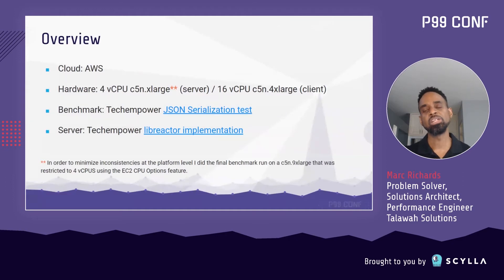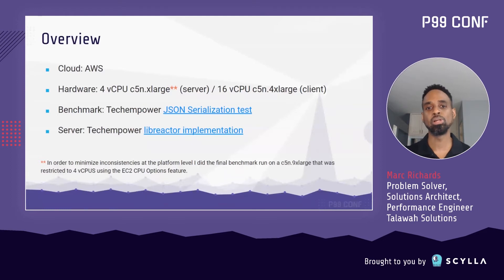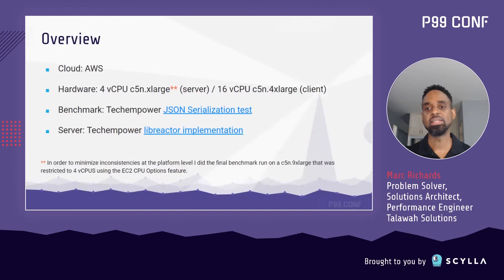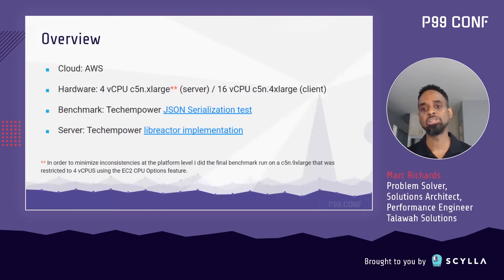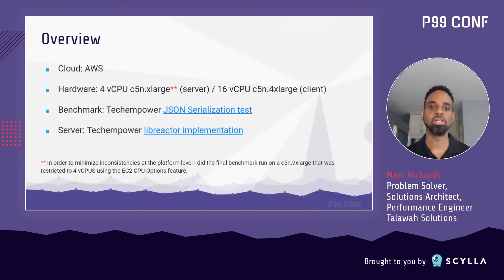The JSON benchmark is pretty simple — it just expects the server to encode and return a hello world JSON object. For the API server software, I started out with an existing implementation that was built using Libreactor, an event-driven application framework written in C, and I contributed my modifications as I went along.